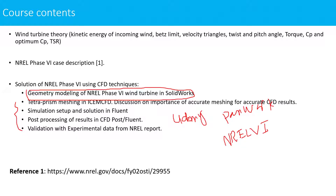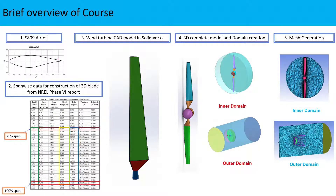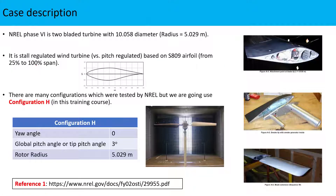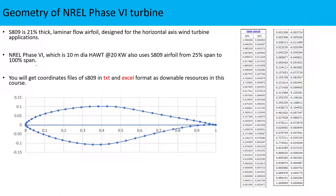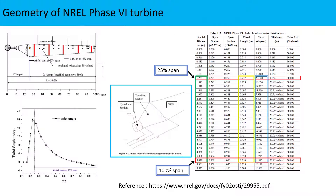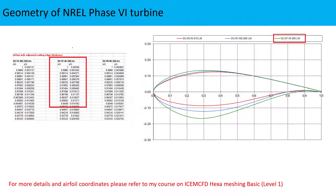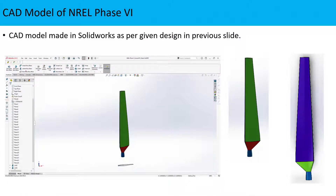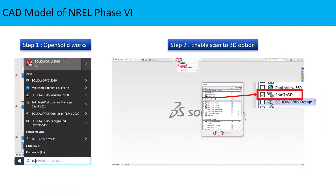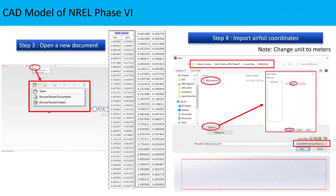The geometry section is completely given here. In the geometry section we start with the aerofoil, which is the S809 — a 21% thickness laminar aerofoil. I will discuss this in the coming video. You will open SolidWorks and use the Scan to 3D option to read in the coordinates for the S809 aerofoil.